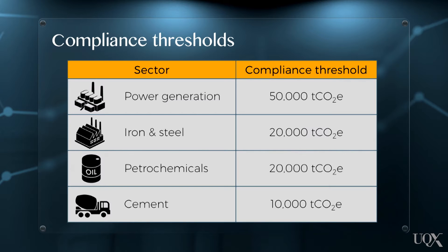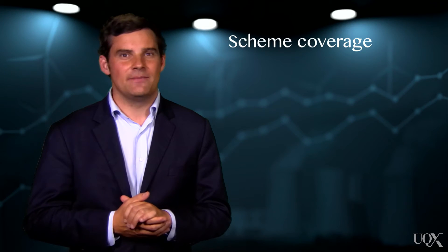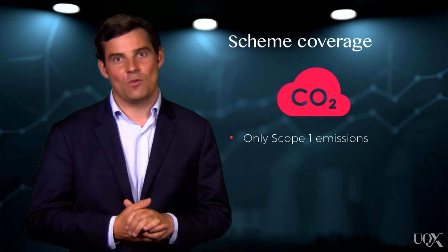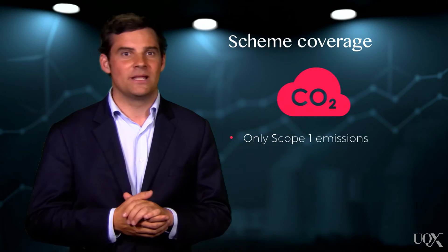For example, an ETS may have a threshold for power generation companies of 50,000 tonnes of carbon dioxide equivalent per year. A company would calculate the carbon footprint across its organisation, and if it falls below 50,000 tonnes of CO2 equivalent per year, it does not have to comply. It's important to note that emissions trading schemes generally only apply to Scope 1 emissions, such as those being directly emitted by a power plant's flue stack.